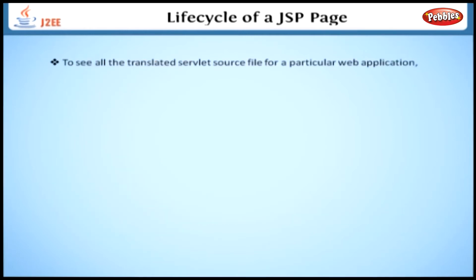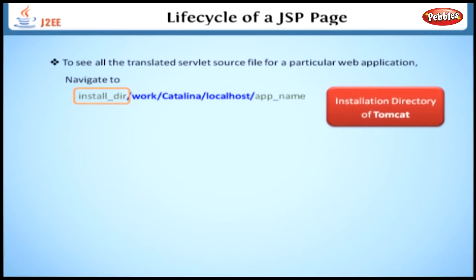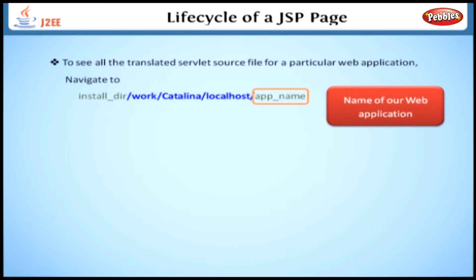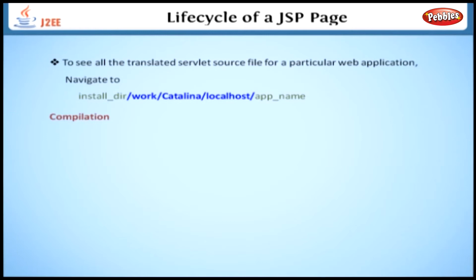If you want to see all the translated Servlet source files for a particular web application, navigate through this directory, where install_dir is the installation directory of Tomcat and app_name is our web application. After translating the JSP to a Servlet, the Servlet is compiled using javac — the compiler used to compile the Java program.